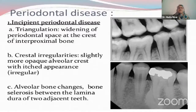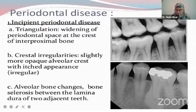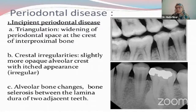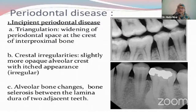Then we have periodontal diseases. In incipient periodontal disease, the main observation is triangulation — that is, widening of the periodontal space at the crest of the interproximal bone. This area should be completely filled with bone, but if it is not, that means there is a bone loss. It is a very incipient lesion, limited to the CEJ. Clinically you can observe gingival bleeding and localized bleeding, and the patient will come with a complaint of gingival bleed with local factors such as calculus. An overhanging restoration could also cause bone resorption interproximally, but it will not be at a generalized level.